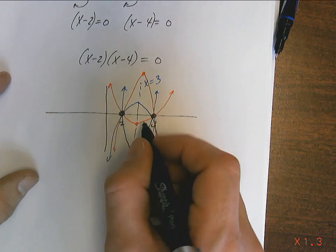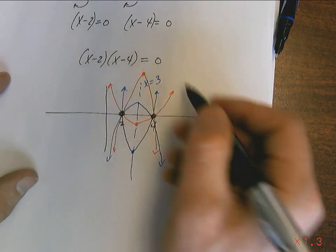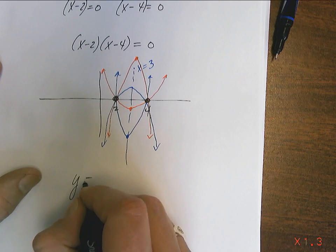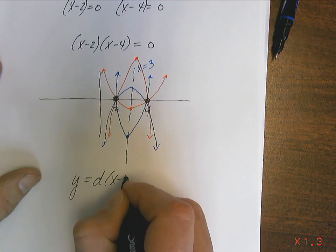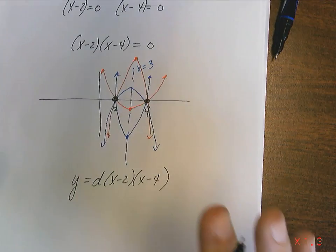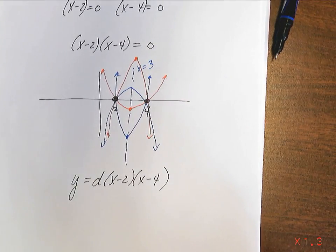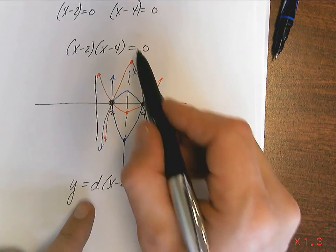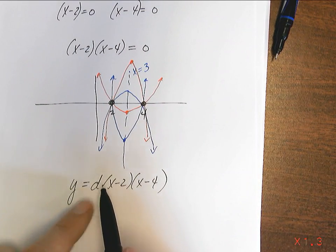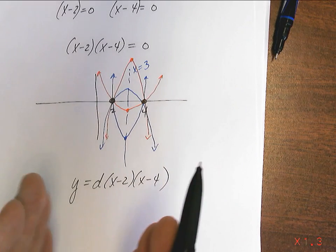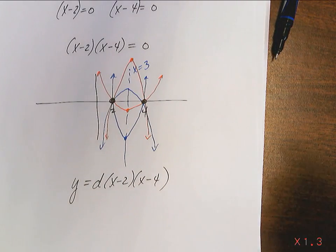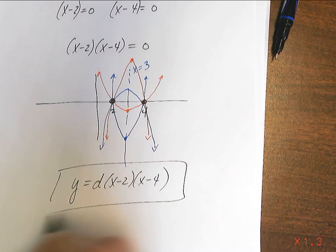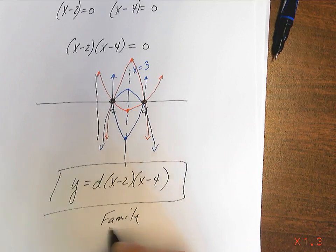So the family of all of these curves, every one of these curves that belongs to a family, it's going to look like this: y equals d times x minus 2 times x minus 4. And those are all the quadratics that will have these two as real distinct roots. This d value allows them to be skinnier, allows them to be fatter, allows them to open up, allows them to open down. And there is a ton of them. There's a family of them.